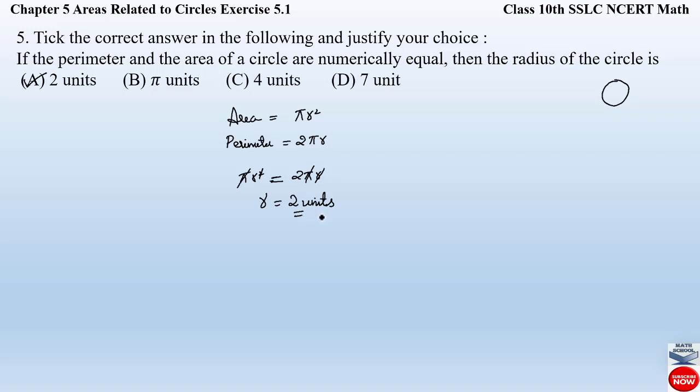So our correct answer, that is the radius of a circle whose perimeter and area are equal, is equal to 2 units. So with this I complete the whole Exercise 5.1.